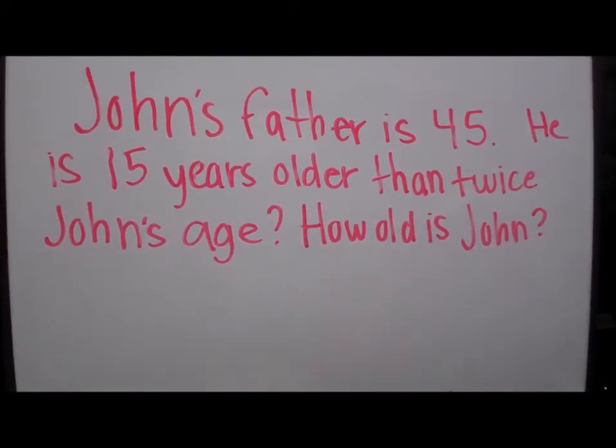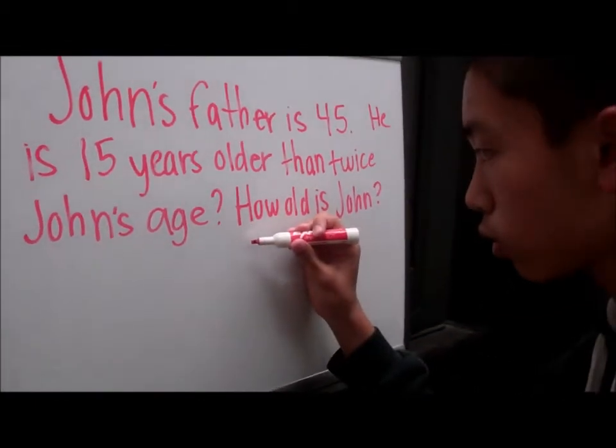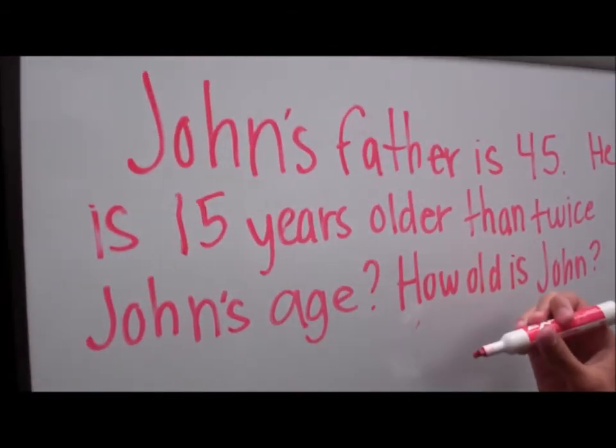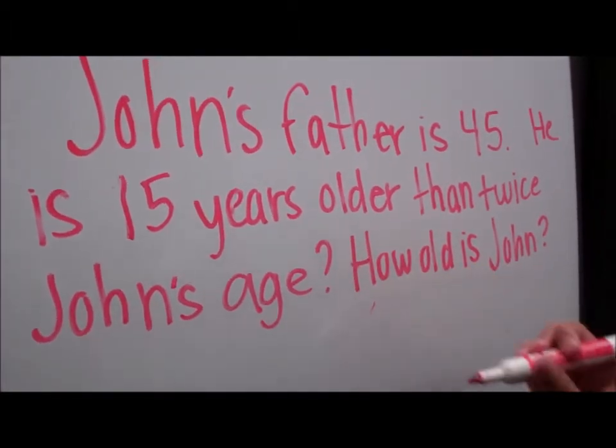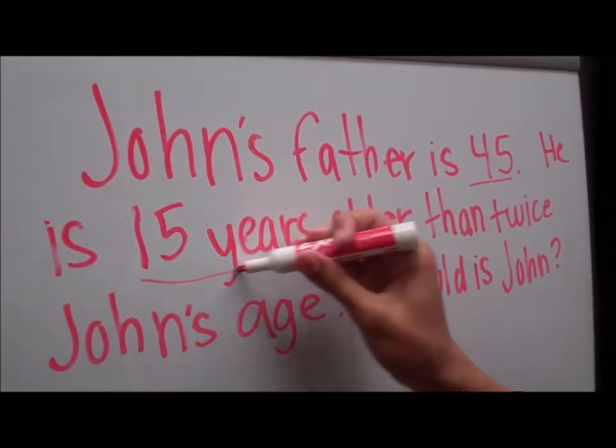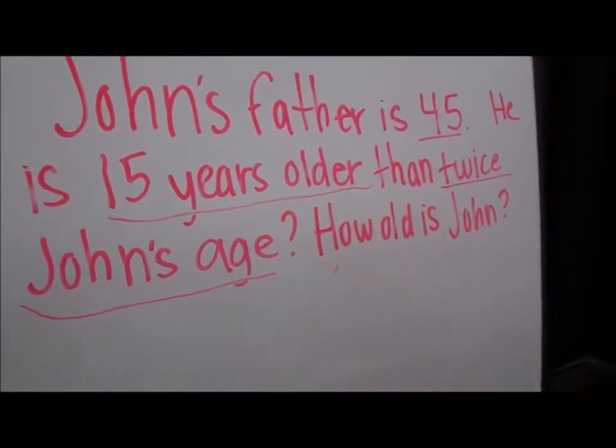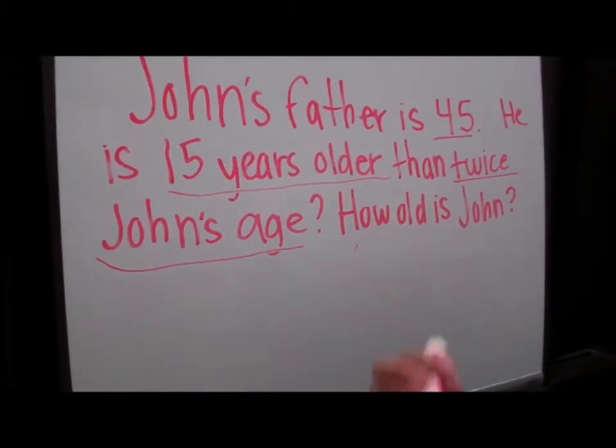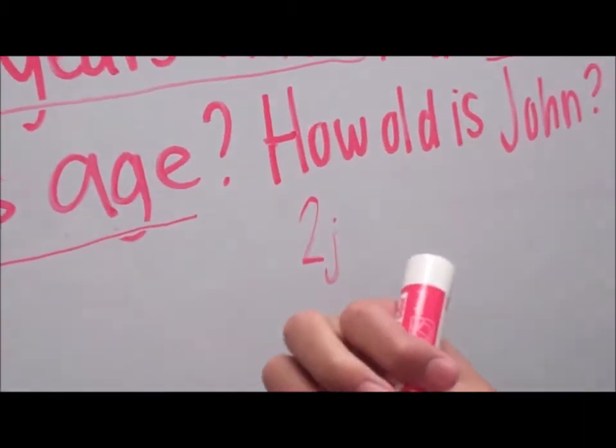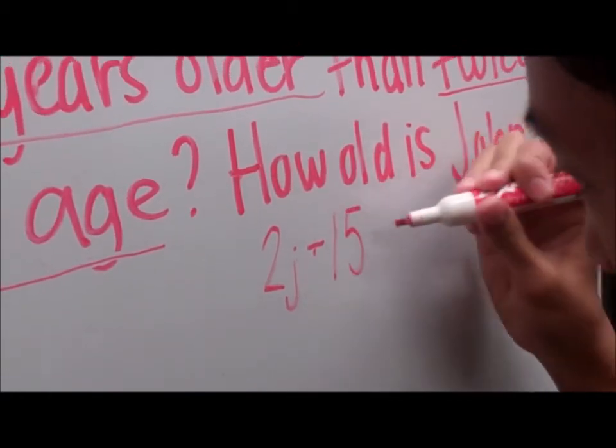Now that we know how to solve an equation, let's solve a word problem. John's father is 45. He is 15 years older than twice John's age. How old is John? And to help us with this problem is our friend Sean, because Dennis didn't want to do it anymore. But that's fine. Sean is smart too. So Sean is underlining all the important information that he needs to solve this. Now that Sean has all the information that he needs, he's going to convert the word problem into an equation so that he can solve it.